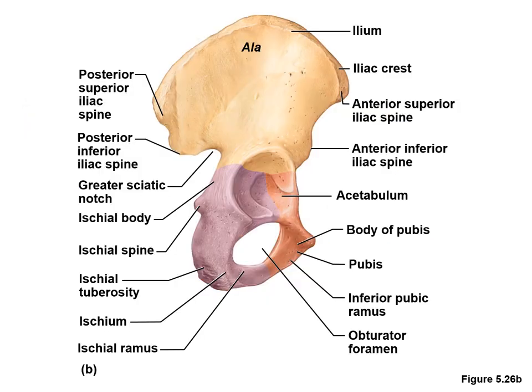The three bones of the pelvic girdle have the following features. The ilium is the largest of the three; its main portion is the body, the superior wing is known as the ala, and the ridge of the ala is the iliac crest. The ischium is the posterior inferior pelvis, containing the superior ischial spine and the inferior ischial tuberosity — the tuberosities are the bones that bear your weight when you sit down. The anterior portion of the pelvis is the pubis, and the bodies of the two pubic bones meet anteriorly at a fibrocartilage pad called the pubic symphysis.